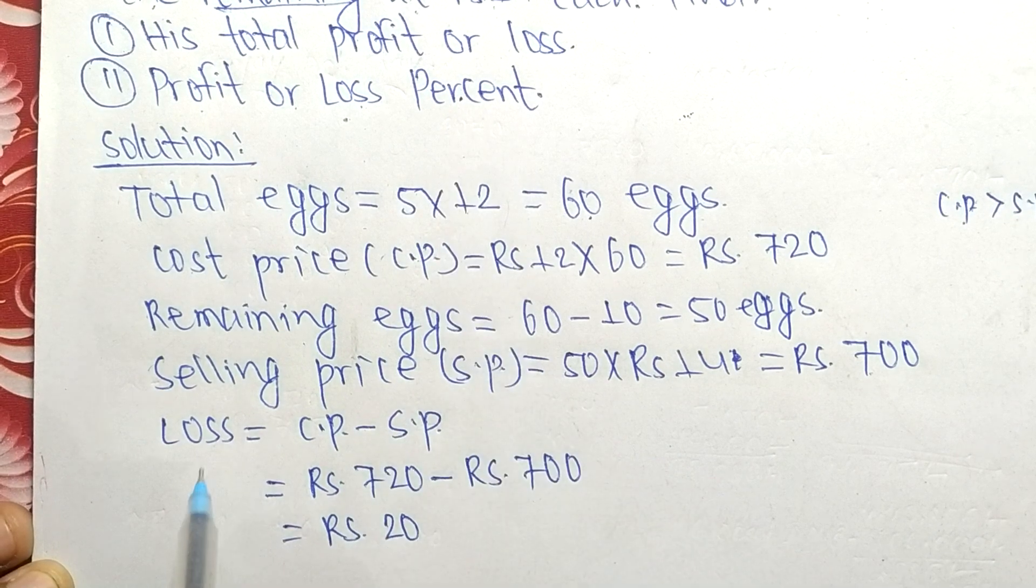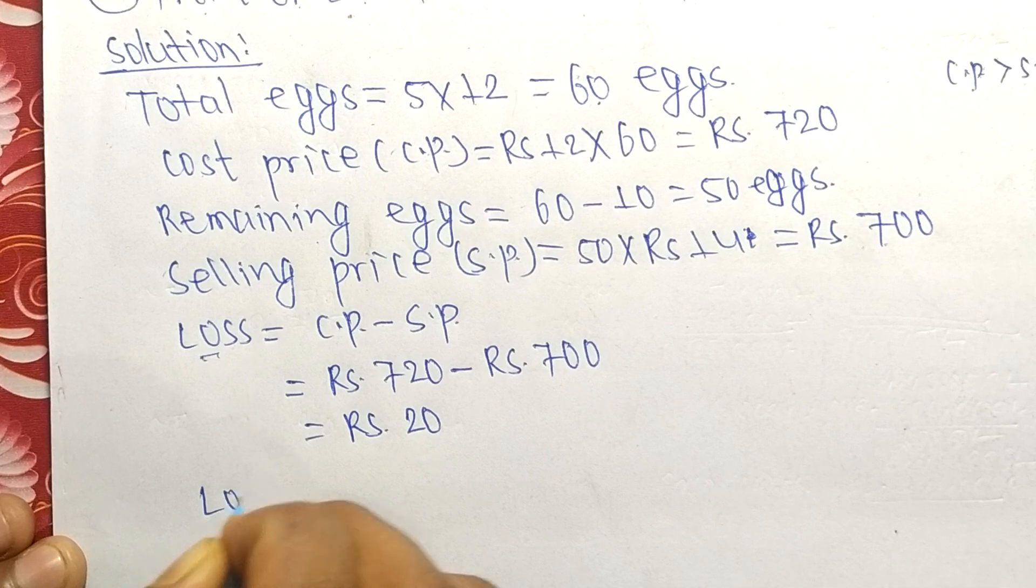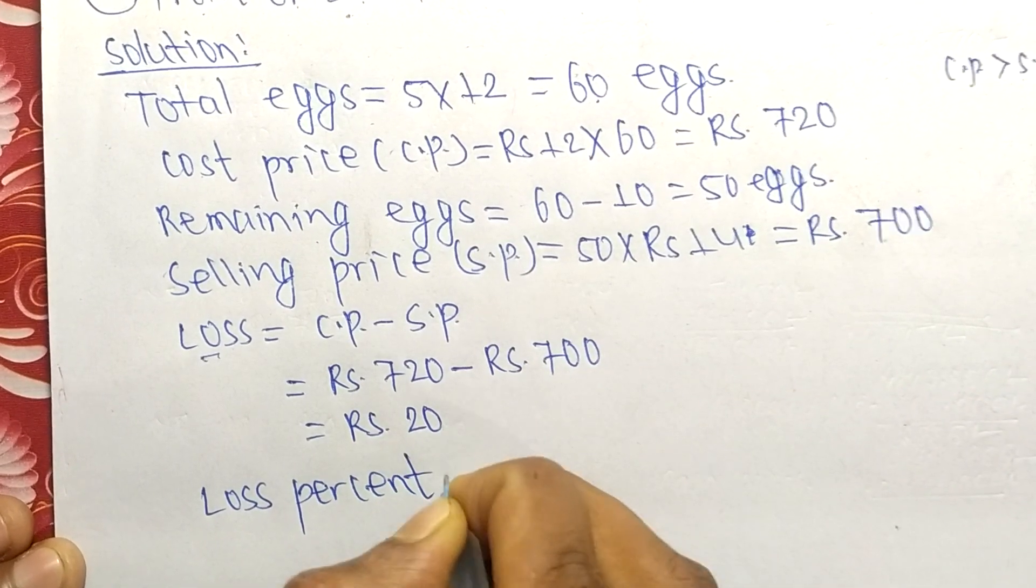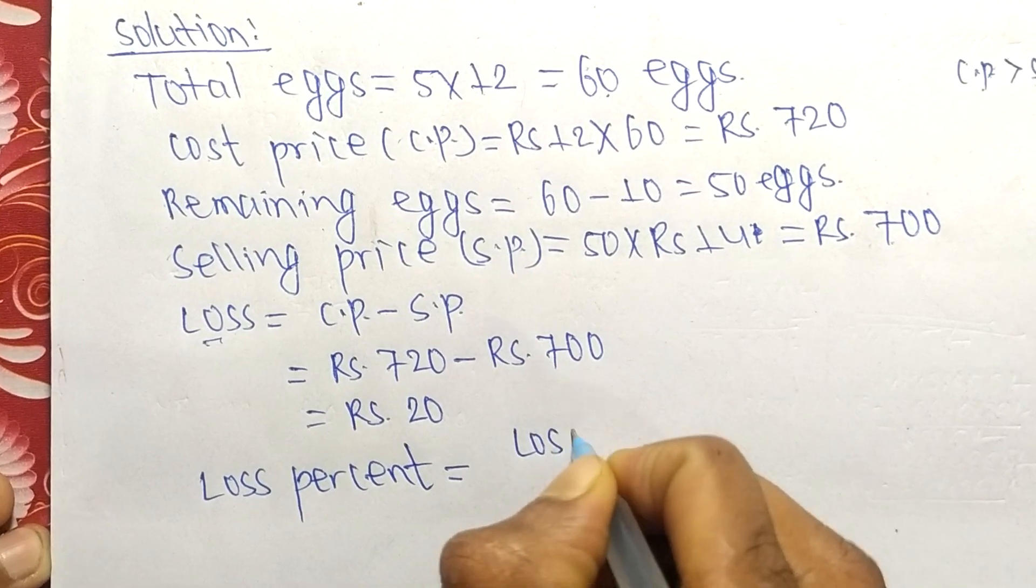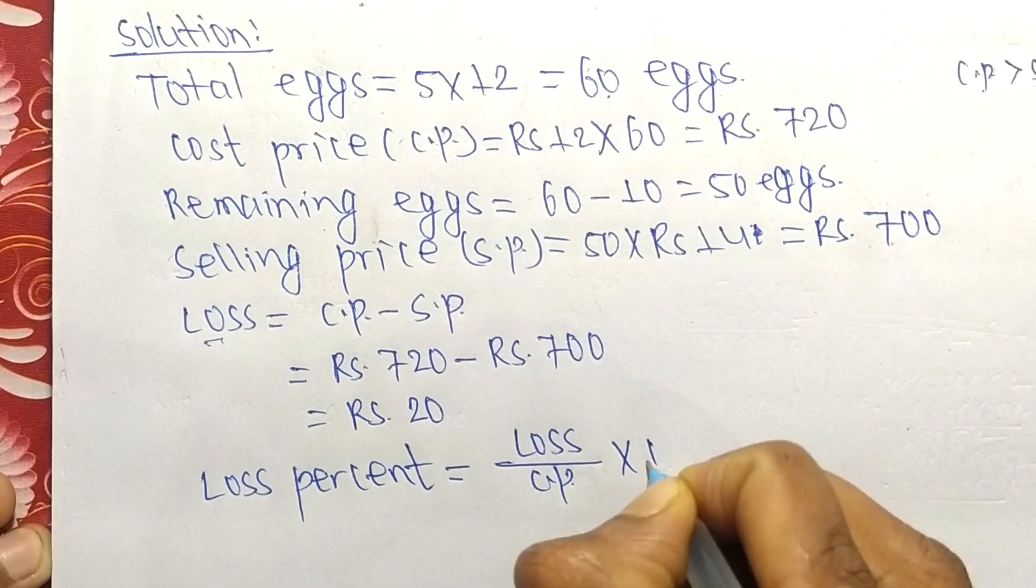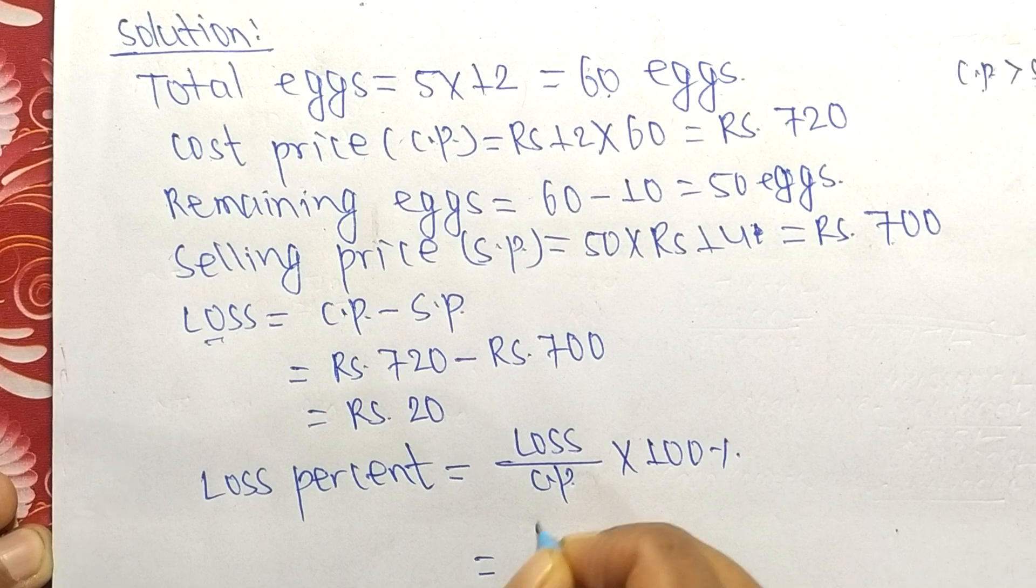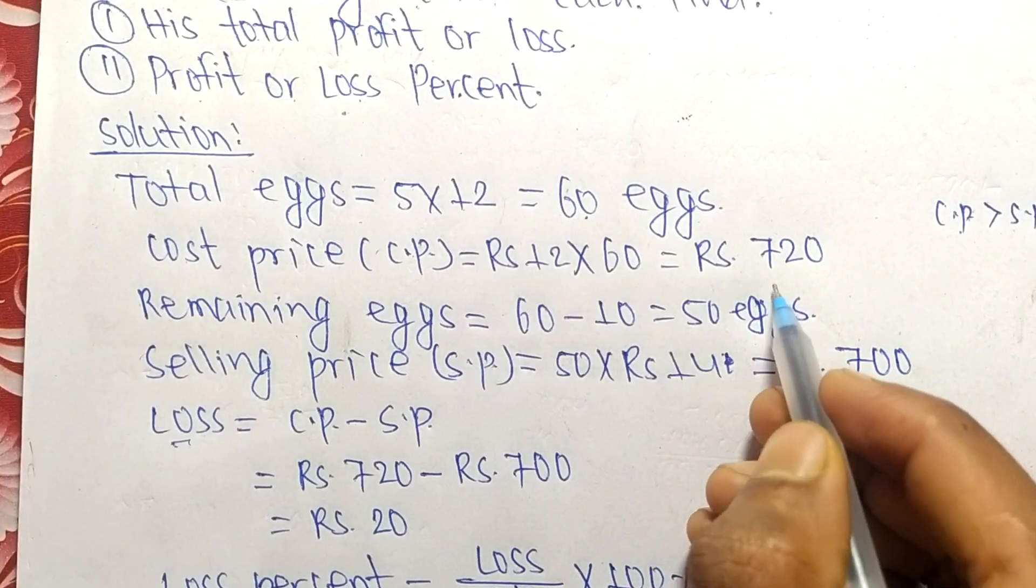Also, we have to find profit or loss percent. We got loss, so now find loss percent. Loss percent formula is (Loss / CP) × 100%. The loss is Rs 20 and the cost price is Rs 720.